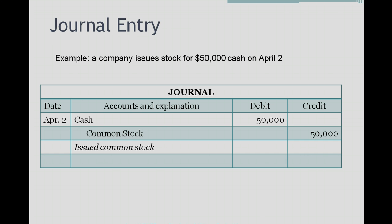This is the format of a journal entry. The example we're going to use is that a company issued stock for $50,000 cash on April 2nd. The first step is to identify which accounts are affected by this transaction. The two accounts affected are common stock and cash. Cash is an asset and common stock is owner's equity. Next, which items are increased and which are decreased? Cash is increased by $50,000, and so is common stock.